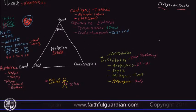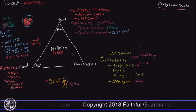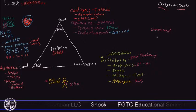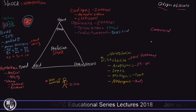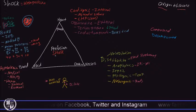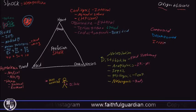There are three phases of shock. In compensated shock, the body is compensating for an existing issue. In decompensated shock, the body has been trying but can no longer function adequately. In irreversible shock, the patient is very, very far gone — very sick — and it takes a lot to get these patients back.